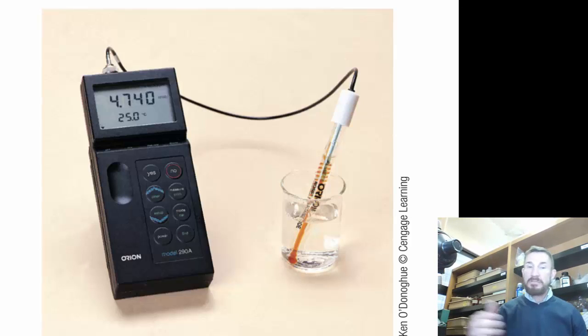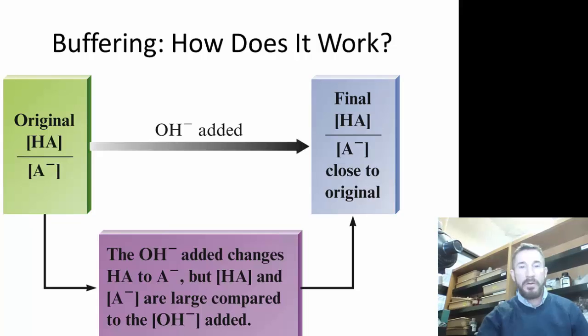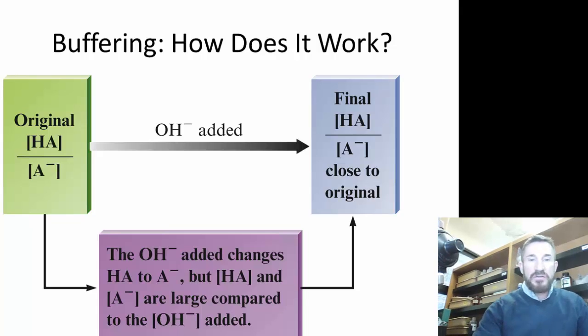The buffering part is the acetic acid which combines with hydroxide, or the acetate ion which combines with a proton. So this is an excellent buffer. You get the pH, and the pH just changes a little bit.